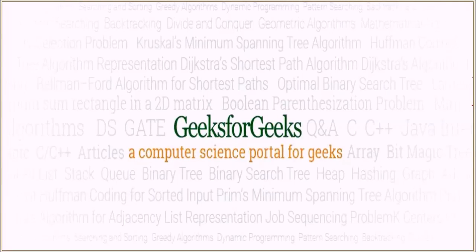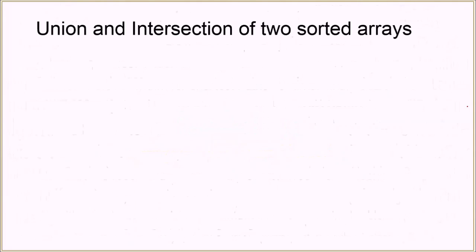Hello everyone and welcome to GeeksforGeeks. Today the problem we want to look at is union and intersection of two sorted arrays. By sorted arrays we mean that the arrays should be sorted in ascending order, starting from the smallest element to the largest element.